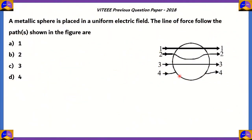So today, this is our first question. A metallic sphere is placed in a uniform electric field. The line of force follows the path shown in the figure. We have four possible paths here and we need to find out which of these is correct. Path one goes to the side of the ball without touching it. Path two winds around the ball and then continues on its original trajectory. Path three passes through the sphere. Path four starts and stops at the surface of the sphere and then comes out moving in the original direction.